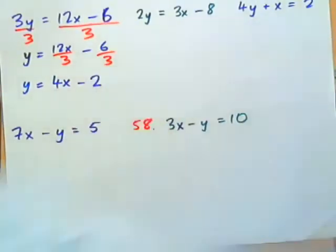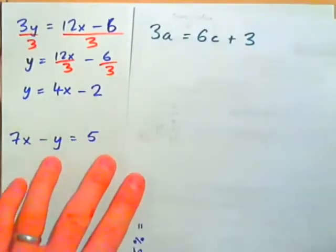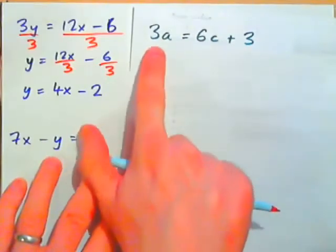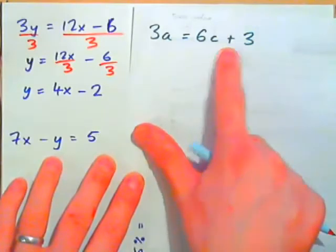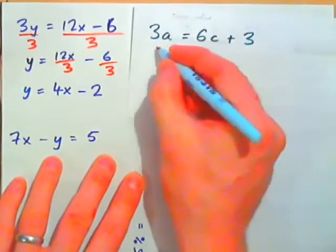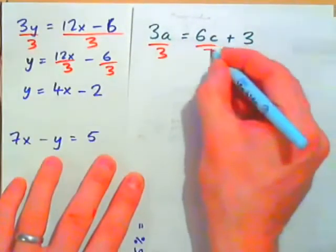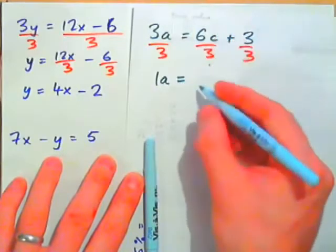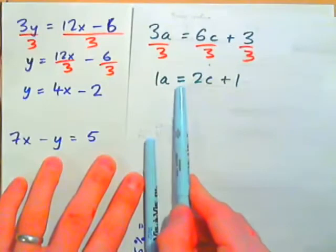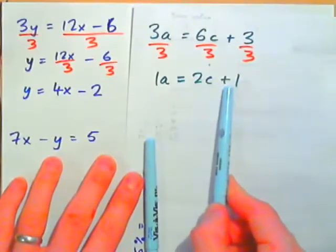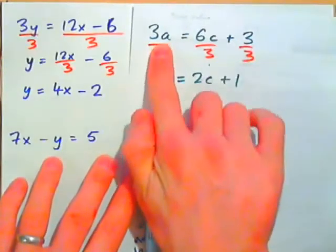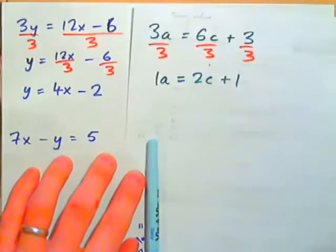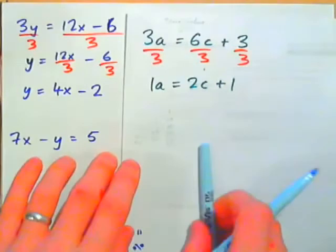Why can we divide a whole side by 3 term by term? Think of it this way: if 3 apples equal 6 cherries plus 3 dollars, then dividing everything by 3 gives 1 apple equals 2 cherries plus 1 dollar. That still holds because the relationship is preserved. You can divide every term in an equation by the same number.